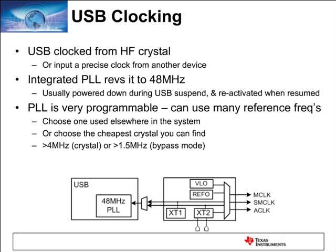In terms of clocking, the MSP430 solution provides an integrated PLL. A low-jitter, high-accuracy clock is needed for USB to function. You can use a high-frequency crystal anywhere between 1.54 MHz and 32 MHz for this PLL, or if another clock is already available on your system, you can provide a digital input to the HF crystal pin — either a HF crystal or just a digital input.